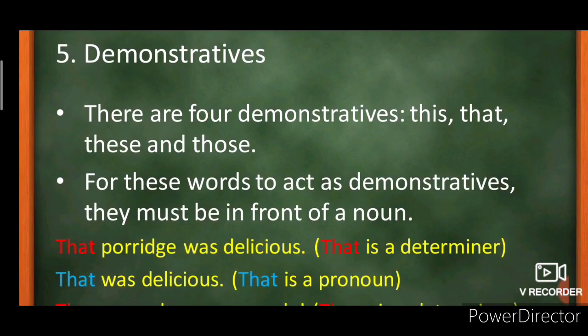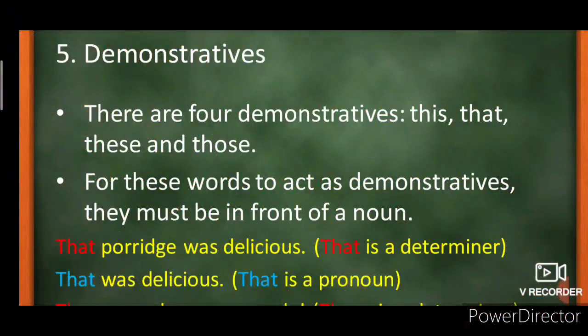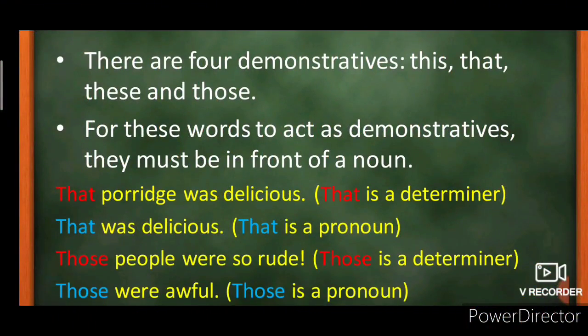Demonstrative determiners are this, that, these, those. For example, 'That porridge was delicious' — here that is a determiner because we have written that just before the noun porridge. But in 'That was delicious,' after that there is a verb, not a noun. So in that case, this is your demonstrative pronoun.